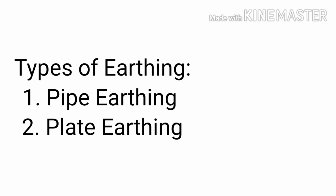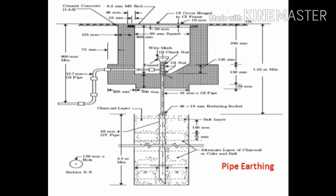There are many types of earthings, but the two types of earthings are very much popular and they are pipe earthing and plate earthing. Now, we will study these one by one. First, we will take pipe earthing.